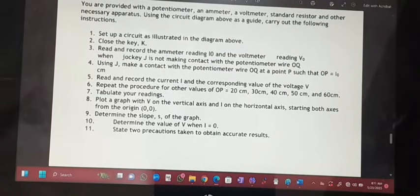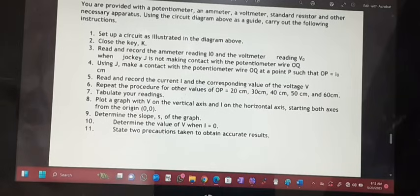Tabulate your readings. Plot a graph with V on the vertical axis and I on the horizontal axis, starting both axes from the origin. Determine the slope S of the graph. Then determine the value of V when I is equal to 0.